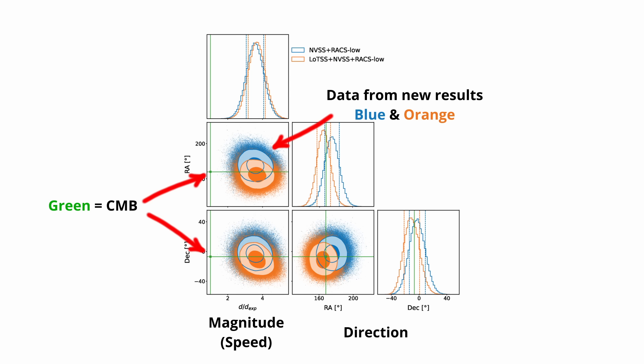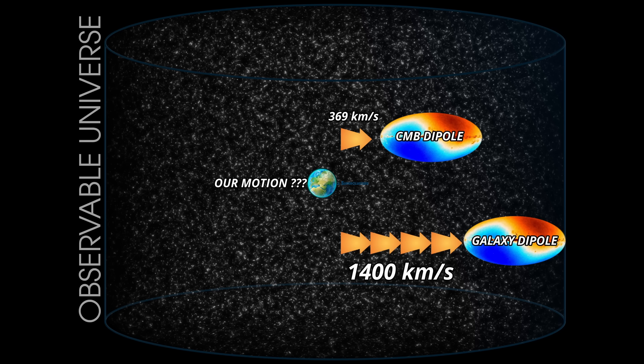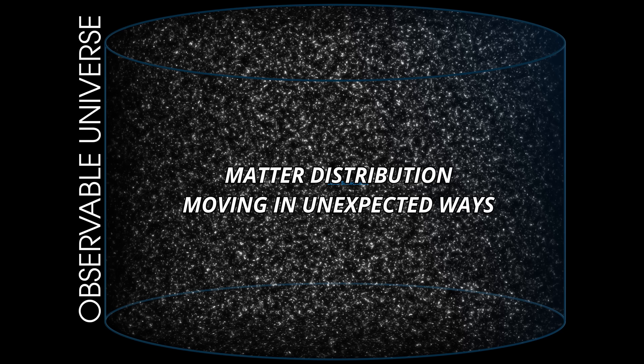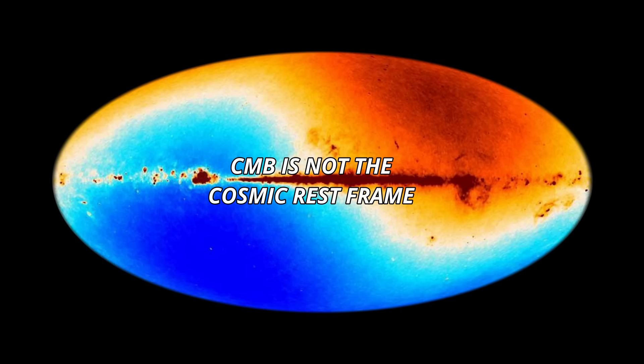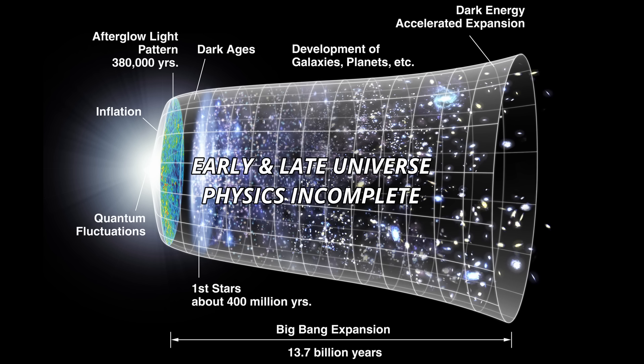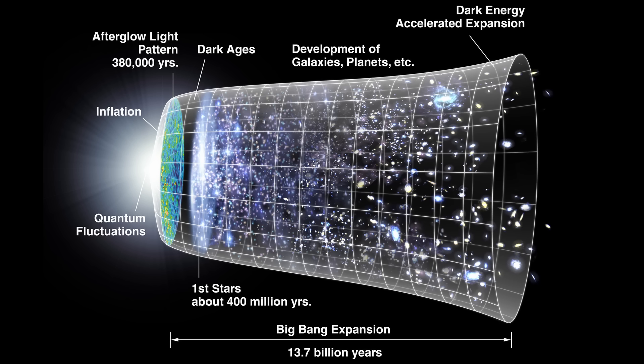This is why the result is so hard to ignore. The direction matches the CMB, the magnitude breaks the model. And once you accept the measurement is clean, the contradiction becomes brutally simple. Two independent ways of measuring our motion now give incompatible answers. And inside Lambda CDM, that leaves only a few possibilities. The first, the matter distribution is doing something unexpected on enormous scales. The second, the CMB isn't tracing the cosmic rest frame as cleanly as assumed. And lastly, the connection between early and late-universe physics is incomplete. None of these options sit comfortably inside Lambda CDM. And that's the point. The tension isn't local, it's conceptual. And it strikes at the model's assumptions, not its data sets.